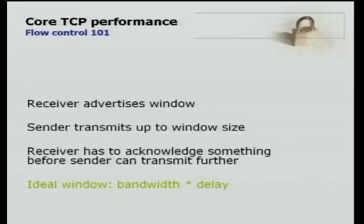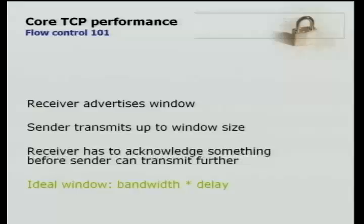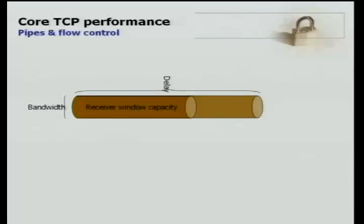For flow control: the receiver advertises a window — the number of bytes that the receiver is willing to accept. The sender can send that many bytes and then it has to stop and wait for an acknowledgement before it can send more. What window should the receiver advertise? The ideal window is the product of the bandwidth and the delay. You can model the path between a sender and a receiver as a pipe. The receive window capacity is essentially a particular volume cross-section of that pipe — the length of the pipe is the delay and the cross-section represents the bandwidth.